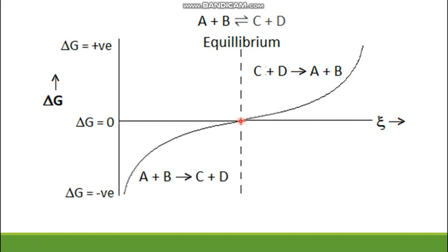The significance of this midpoint is that it is the equilibrium point. Before that midpoint, the curve exists in the fourth quadrant — meaning ΔG is negative — so the forward reaction A + B → C + D takes place. After the equilibrium point, the curve exists in the first quadrant — meaning ΔG is positive — so the backward reaction C + D → A + B takes place, moving the system back toward equilibrium. This is the graphical presentation of ΔG against ξ.